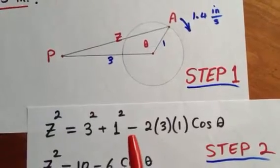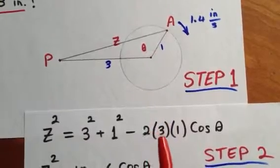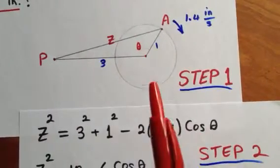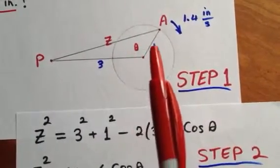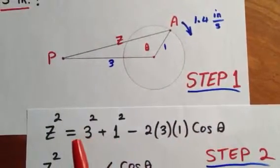What's new here is minus twice the product of those two sides, 3 times 1, times the cosine of the angle between those two sides. This is the law of cosines.